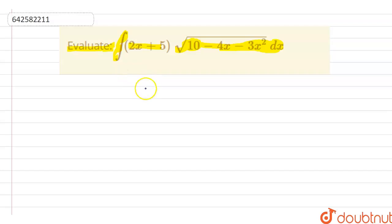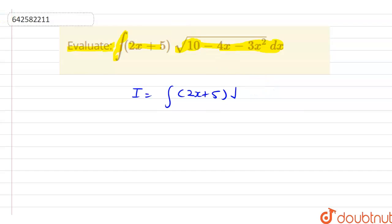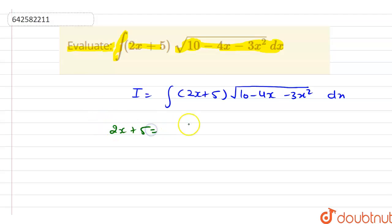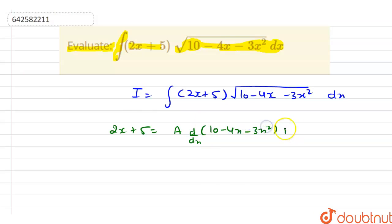So here we have I equal to the integration of (2x + 5) into under root of (10 minus 4x minus 3x squared) dx. Now let us write 2x + 5 equal to a into d/dx of (10 minus 4x minus 3x squared) plus b.